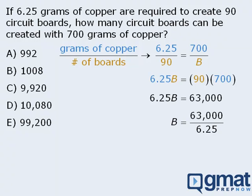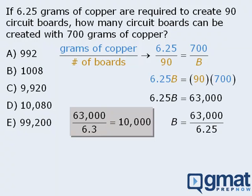Now to evaluate this fraction quickly, first recognize how much easier the fraction would be to evaluate if the denominator were something nicer, like 6.3. If the denominator were 6.3, then the fraction would evaluate to be 10,000. Since 6.25 is very close to 6.3, the correct answer here will be around 10,000.